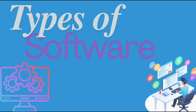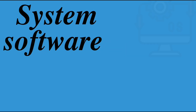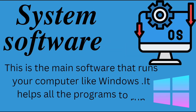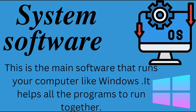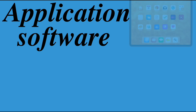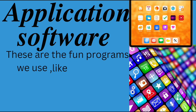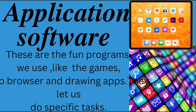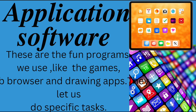Now, let's look at types of software. System software — this is the main software that runs your computer, like Windows. It helps all the other programs work together. Application software — these are the fun programs we use, like games, web browsers, and drawing apps. They let us do specific tasks.